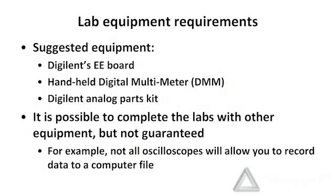Lab assignments are, of course, rather equipment intensive. We suggest that you have the following equipment: a Digilent EE board, a handheld digital multimeter, and a Digilent analog parts kit. This equipment is not necessarily required — it is certainly possible to complete the labs with other equipment, for example bench equipment available at some universities. But we do not guarantee that it will be easy to do the labs with alternate equipment. For example, not all oscilloscopes will allow you to record your data to a file, and we do have that requirement on a number of these lab assignments.